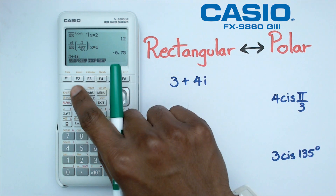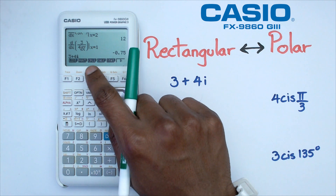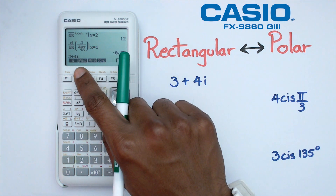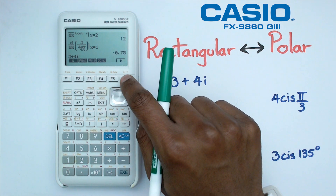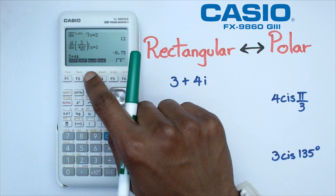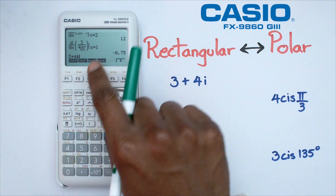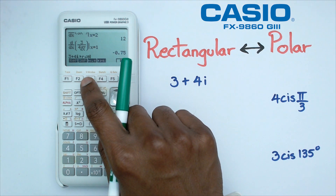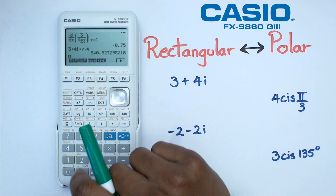Now we want to convert this into polar form. The way we're going to do this is by clicking on option and we're going to get this little menu called complex, which is F3. Click on that and we're going to get another set of menus here. We're going to click on F6 to go to the next page of the menu, and right here we should be able to see the button for converting the number into polar form.